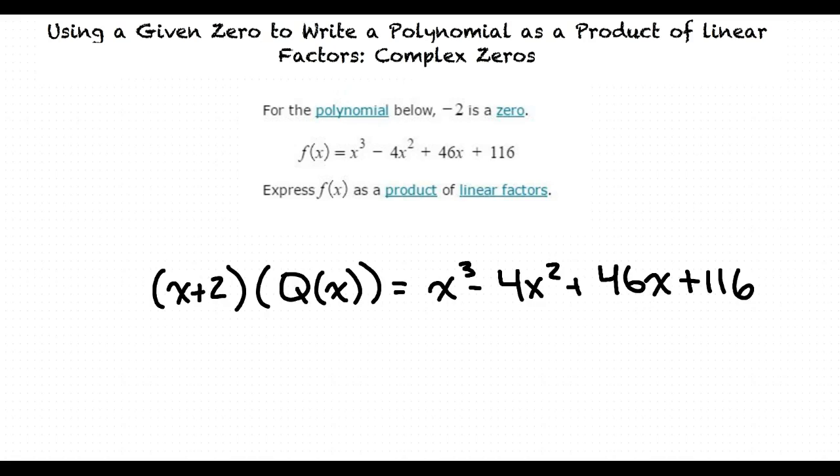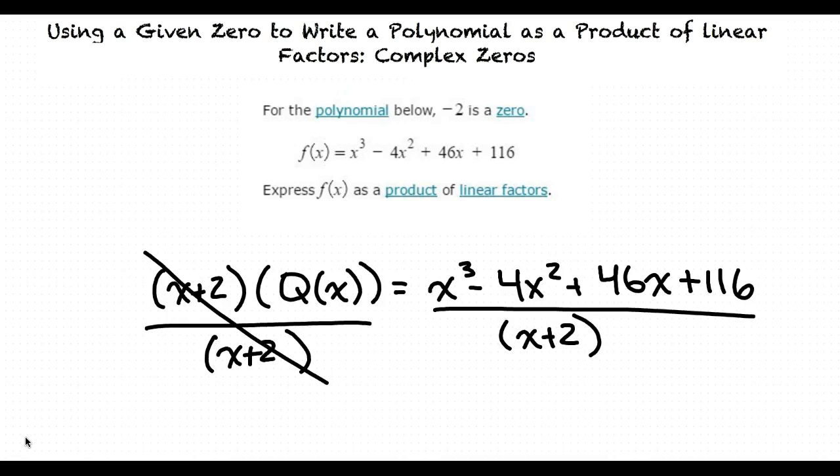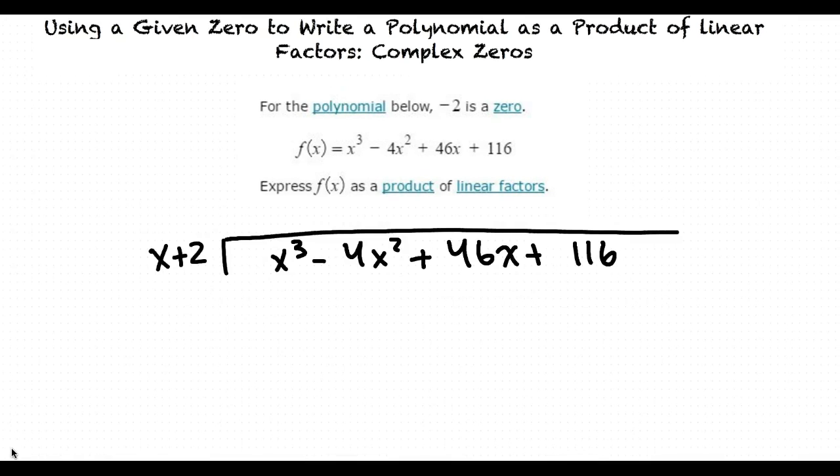So how do we know what function Q(x) is? This is where the process of polynomial long division comes into play. By using polynomial long division, we can solve for Q(x). We do this by dividing x cubed minus 4x squared plus 46x plus 116 by x plus 2. This operation is written out in the form shown here.